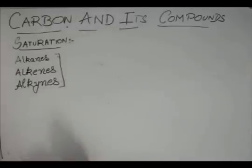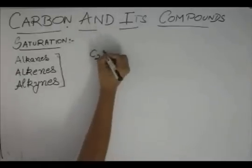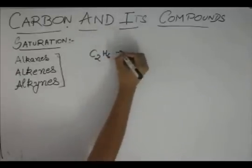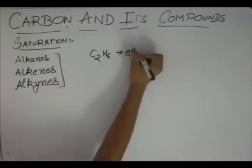So, we already know that C2H6 was ethane.